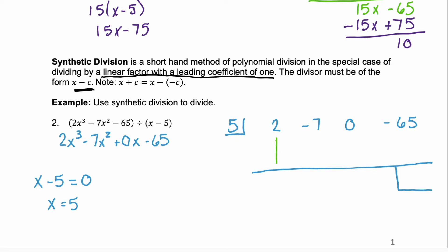The first step is to carry down that first coefficient of 2. Now you multiply your divisor 5 by the 2, which is 10. Now you add vertically: negative 7 plus 10 is positive 3. Multiply that result, 3, by the divisor 5, and you have 15. Add vertically: 0 plus 15 is 15. Multiply that result of 15 by the divisor of 5: 75. Add vertically: negative 65 plus 75 is 10. We have finished synthetic division.